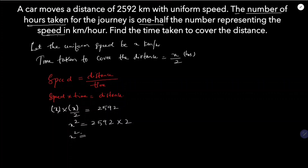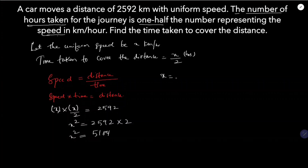Multiplying 2592 by 2 gives 5184. So x squared equals 5184, meaning x equals the square root of 5184.